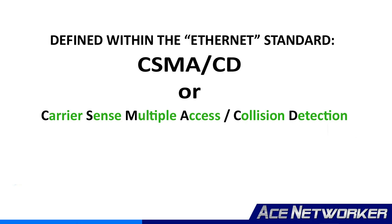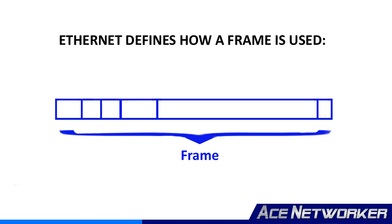Last, but certainly not least — and actually the most important part — is that Ethernet defines how a frame is set up and used. When all devices are using the same standard, Ethernet in most cases, they all use the same frame type and expect that frame type with everything sent over that Ethernet network. Essentially, when all devices on that network are using Ethernet standard cables — UTP, STP, and fiber optic — and they are all using the same frame type defined by Ethernet, it can be said you have an Ethernet network.